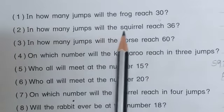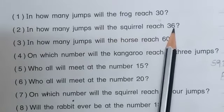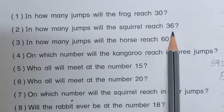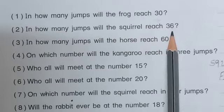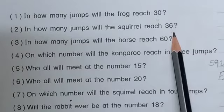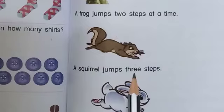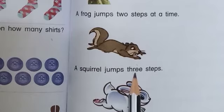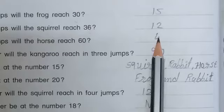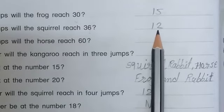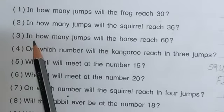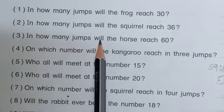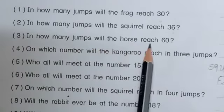Next, second question: in how many jumps will the squirrel reach 36? So squirrel needs to reach number 36. 36 divided by 3 is equal to 12. So we do 36 divided by 3 and get the answer 12. Second blank answer is 12.